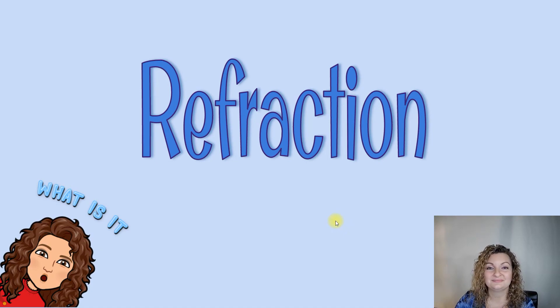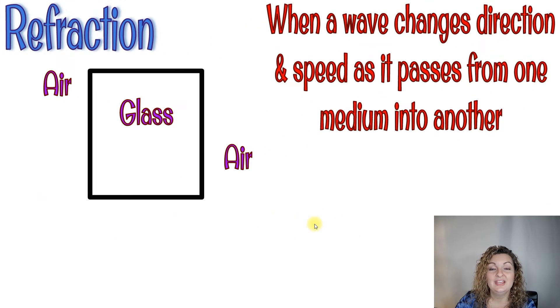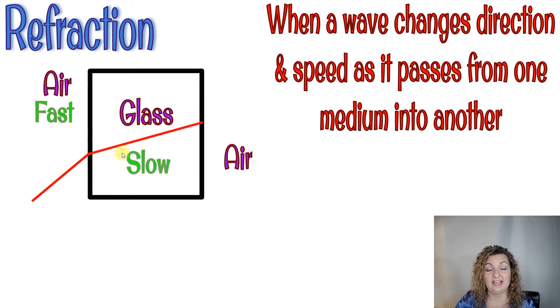Refraction. So refraction is when a wave changes direction and speed as it passes from one medium into another. So I'm showing you an example here. We have two mediums, air and glass. And a beam of light is going to go pretty fast through air because there's hardly any particles there. It's a gas. And it's going to definitely slow down as it enters a solid, which is glass. Now when that occurs, we're going to have a bend in the light and a slower speed. Now as it exits and it goes back into air, which is that gas, it is going to bend and speed up.